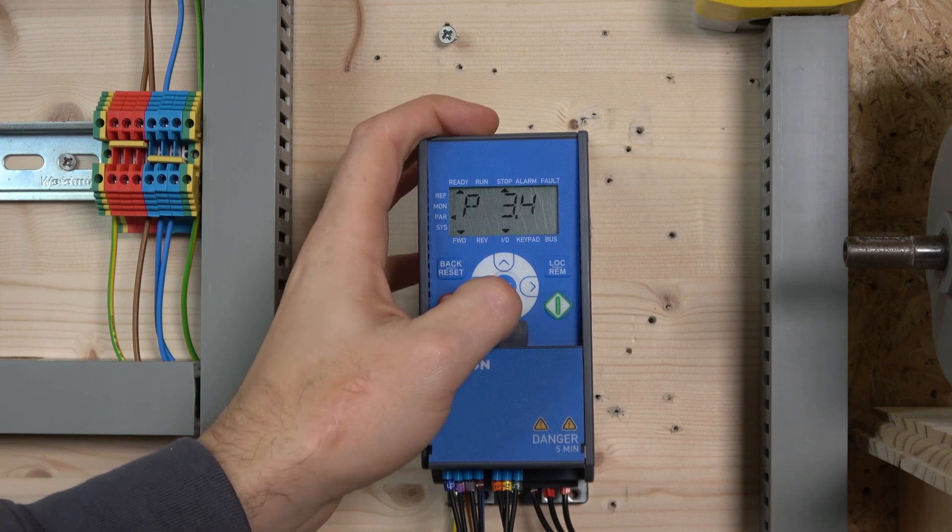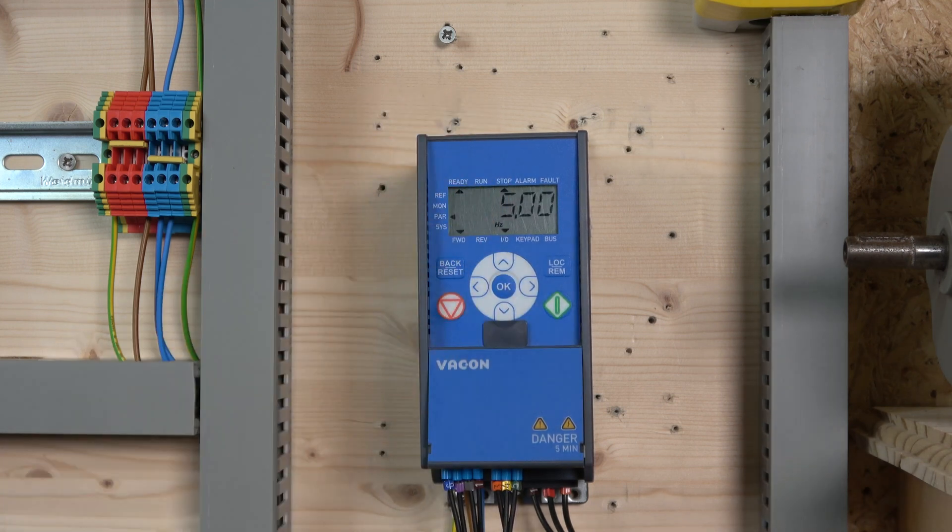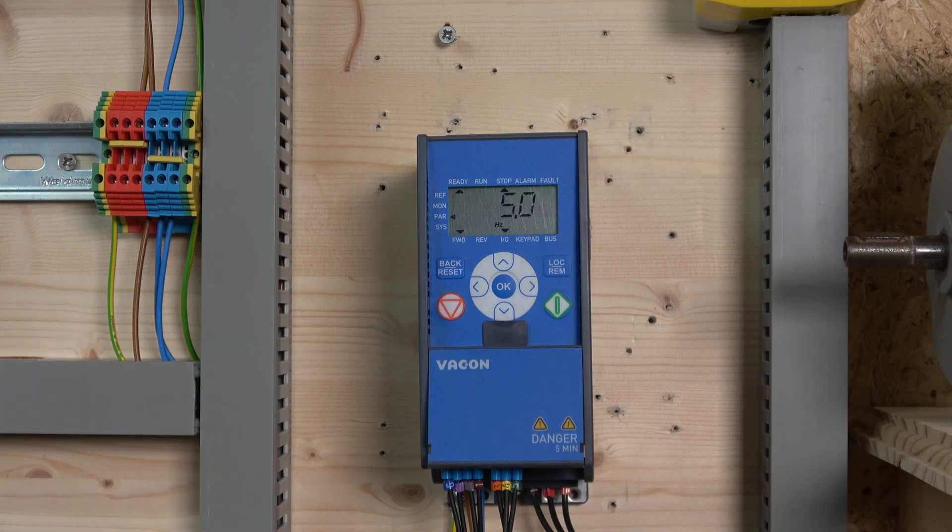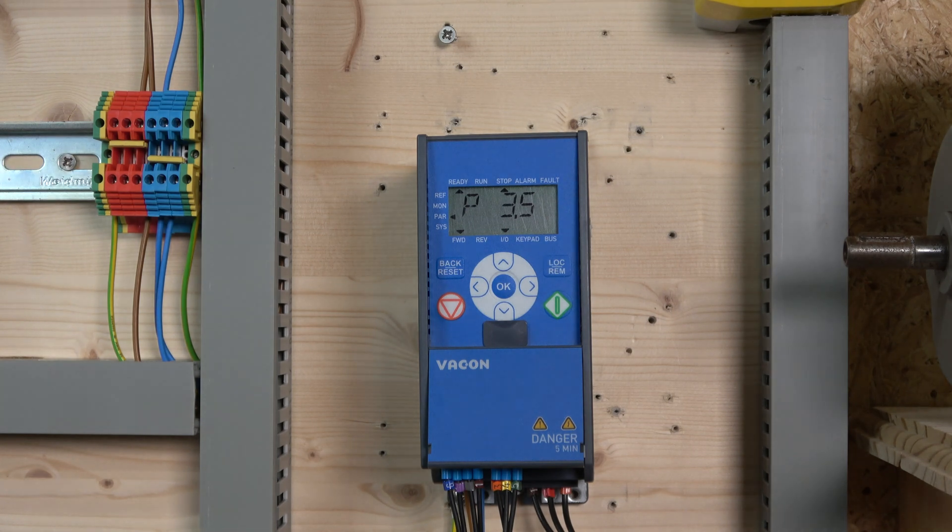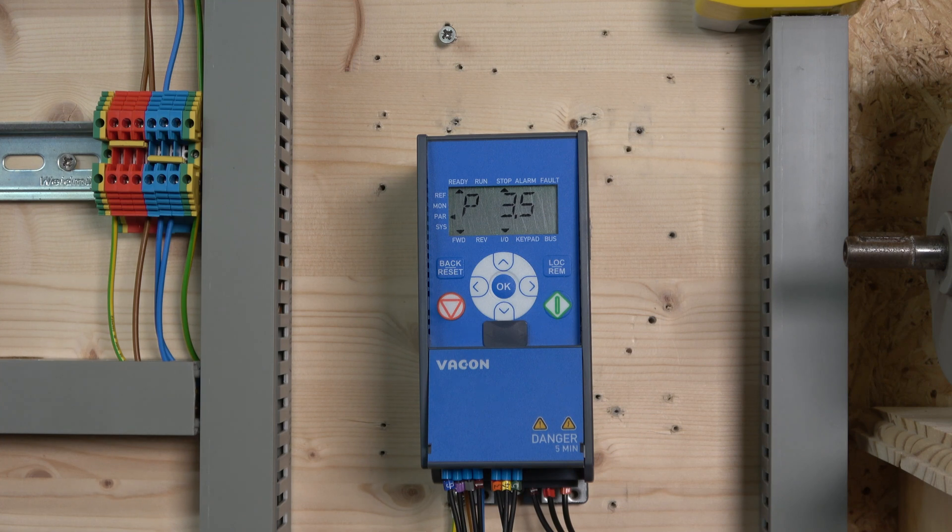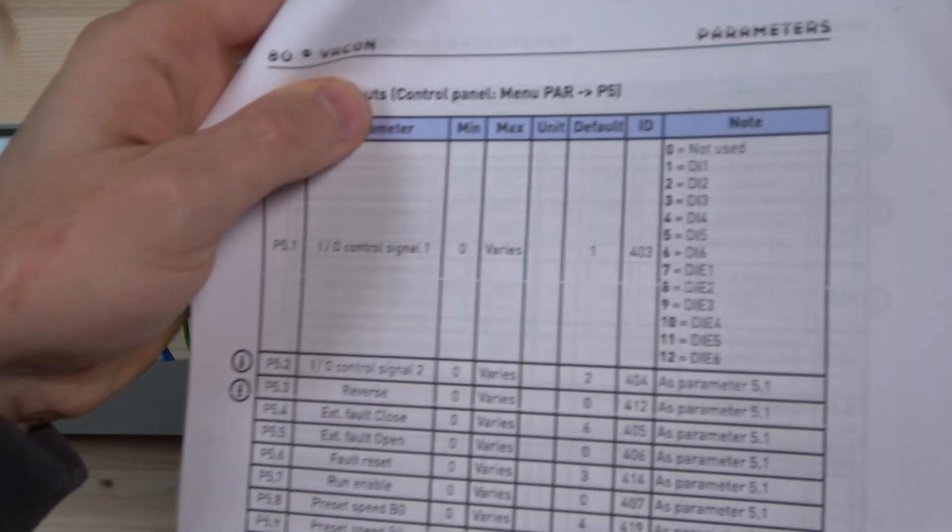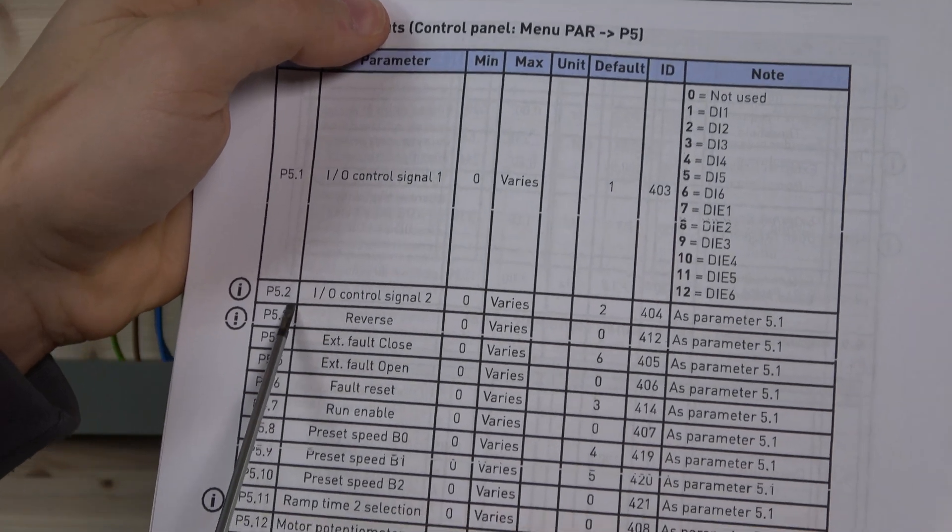In parameter 3.5, I changed it to 5 Hertz, which will give me a preset frequency. In our case, we'll call it jog. I didn't use the default because I want to show you how to reprogram your I/Os. In this drive, same as others, you have to select what you're trying to achieve.